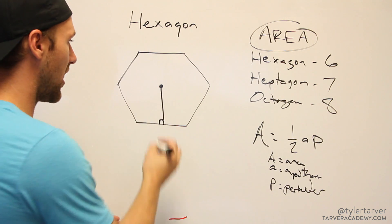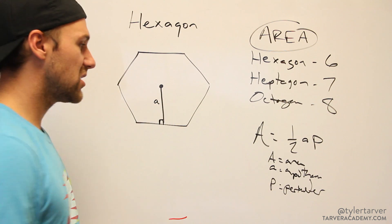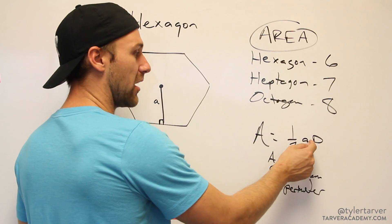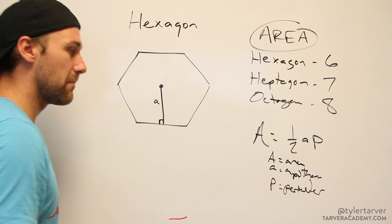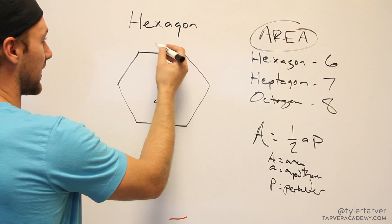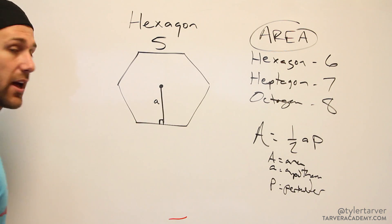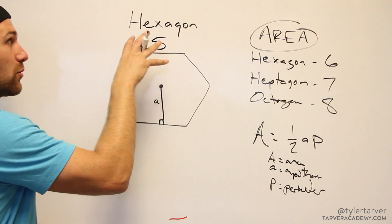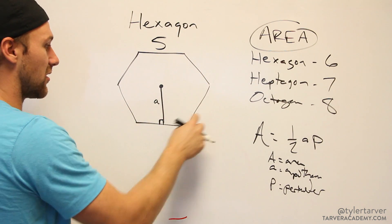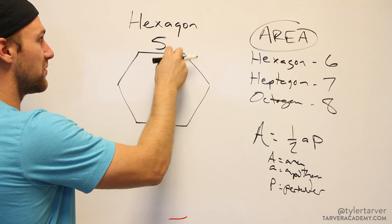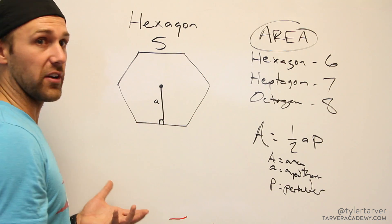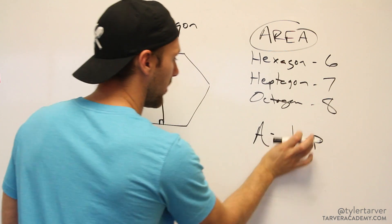Now we need to find our big A, which is our area, by knowing the apothem and the perimeter. For instance, let's say we have a side length of five. If this is a regular hexagon, which means all the angles and sides are equal, we know that all these are five. So we would do five times the number of sides, which is five times six, which is thirty.